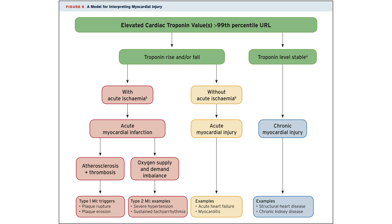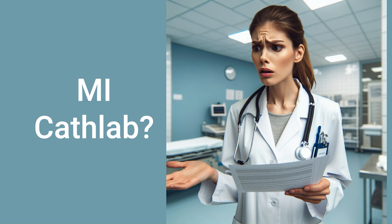Correcting the cause behind increased myocardial demand in type 2 MI, or the cause behind myocardial stress like anemia, sepsis, hypoxemia, infection, etc. And if possible, statins, beta blockers, and aspirin would be all we can offer for these critically ill patients.